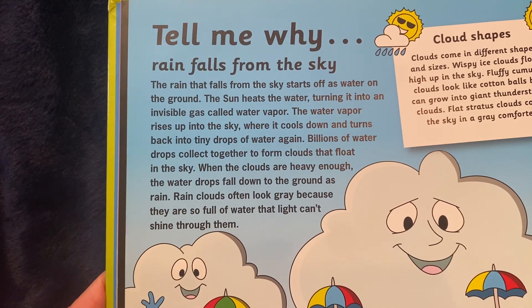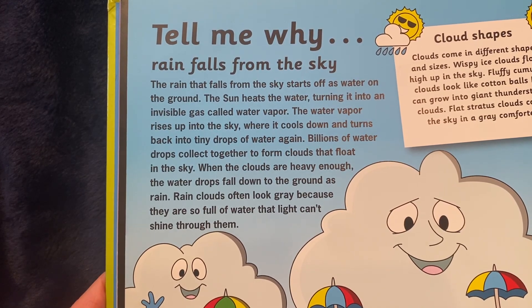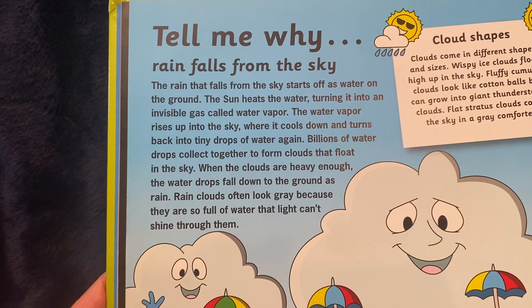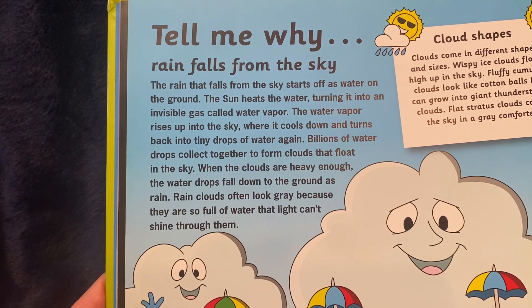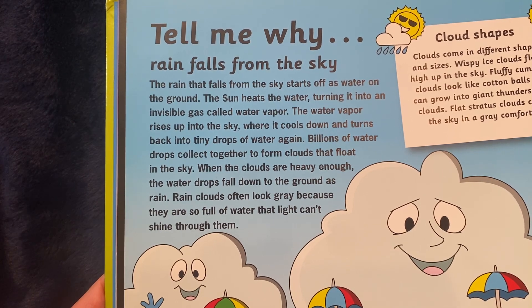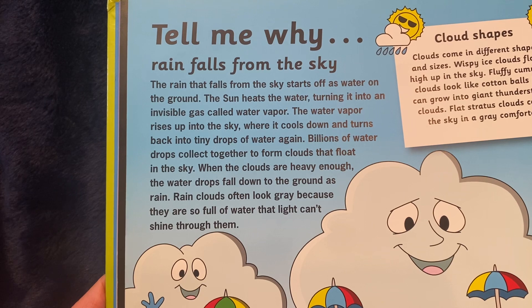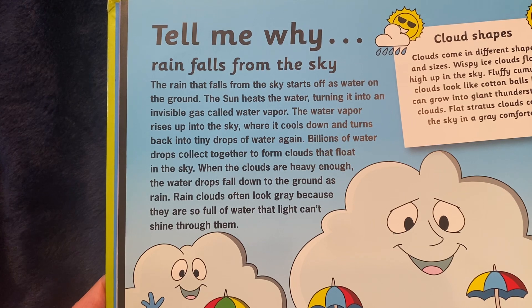The rain that falls from the sky starts off as water on the ground. The sun heats the water, turning it into an invisible gas called water vapor. The water vapor rises up into the sky where it cools down and turns back into tiny drops of water again.